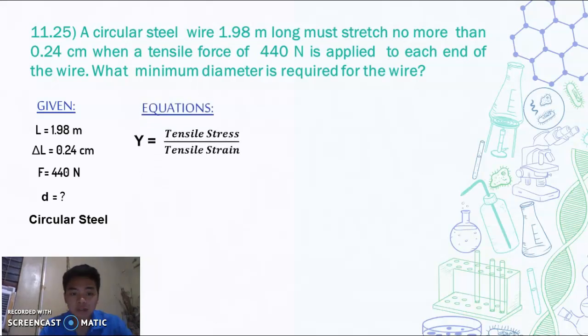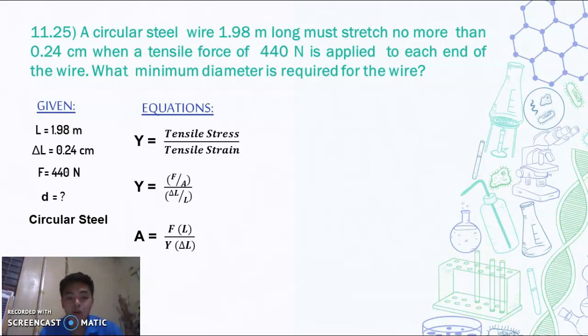For the equations, we have Y equals tensile stress over tensile strain, which is F over A all over change in L over L. So with some derivation, we can get that area is equal to FL all over Y times change in L. So for this problem, we have a Young modulus of 2.0 times 10 to the 11, which is for steel.